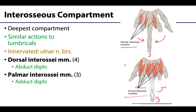The dorsal interossei abduct and the palmar interossei adduct. A useful mnemonic is DAB and PAD — Dorsal ABduct, Palmar ADduct. Conveniently, the same mnemonic applies to the interossei of the foot as well, so one mnemonic covers both.